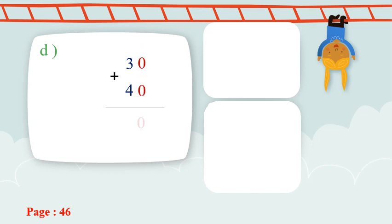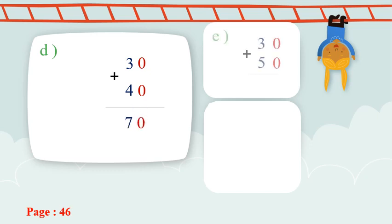...zero equals zero. Three plus four — four on my mind, three on my hand — after four: five, six, seven. The answer will be sixty. Excellent!